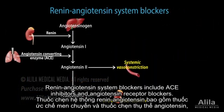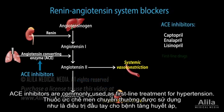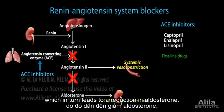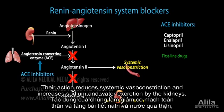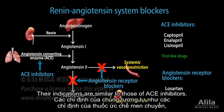Renin-angiotensin system blockers include ACE inhibitors and angiotensin receptor blockers. ACE inhibitors are commonly used as first-line treatment for hypertension. They block the conversion of angiotensin-1 to angiotensin-2, which in turn leads to a reduction in aldosterone. Their action reduces systemic vasoconstriction and increases sodium and water excretion by the kidneys. Angiotensin receptor blockers inhibit the effects of angiotensin-2, and their indications are similar to those of ACE inhibitors.